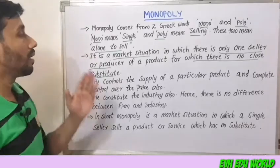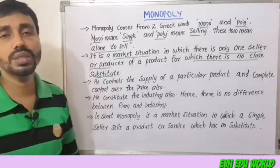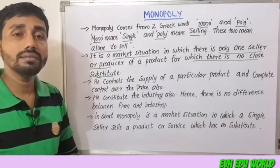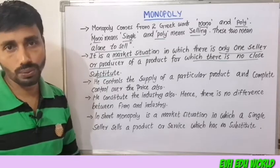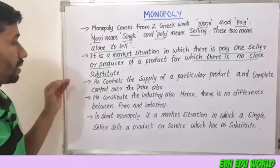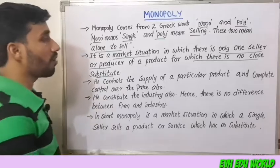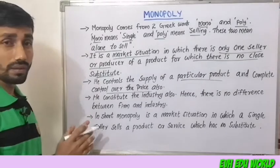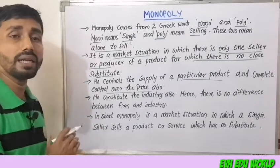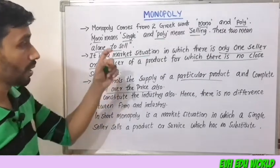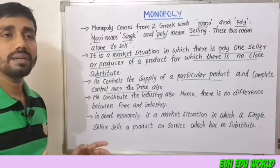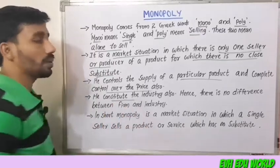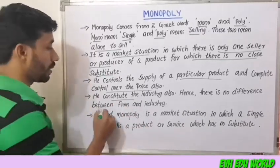In other words, in a monopoly there is only one seller or producer and there is no close substitute. The monopolist controls the supply of a particular product and has complete control over the price. He also constitutes the industry.